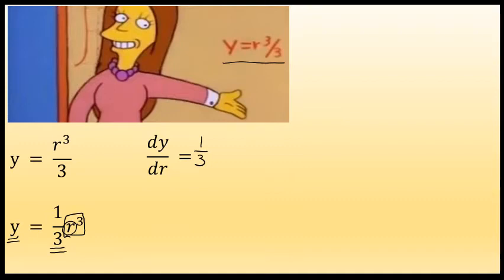The power rule states that the derivative of R to the third power would involve taking that power of three on R, moving it to the front, multiplying it times R, and additionally reducing the power on R by one. You take the power of three on R, move it to the front, and then decrease that power by one.